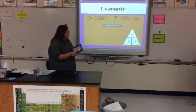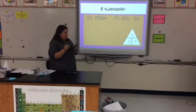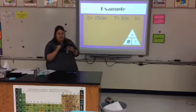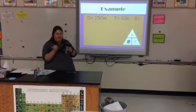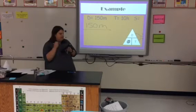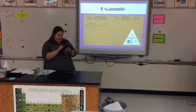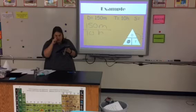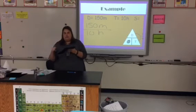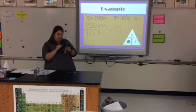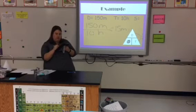Let's look at another example. I'm looking for speed again, so I cover up speed on the distance-speed-time triangle, which tells me to divide. I put distance on top and make sure to include units of measurement so I get the correct unit for speed. My time is 10 hours. When I divide this out, I get 15 meters per hour.